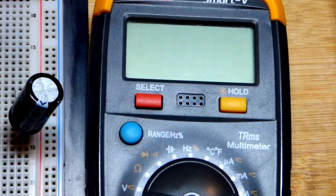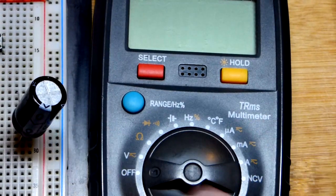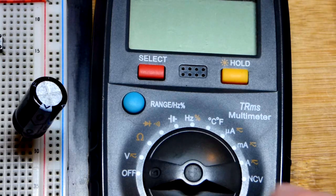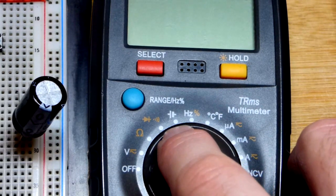First off, the multimeter has to be able to measure capacitance. You don't want the capacitor to be part of a circuit during this time. It has to be discharged. We'll come to that in a little bit.